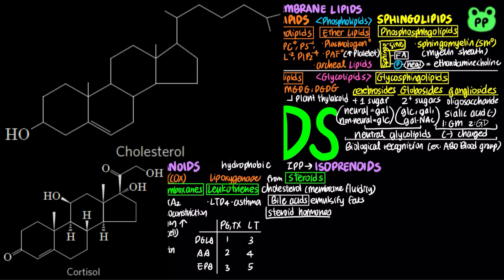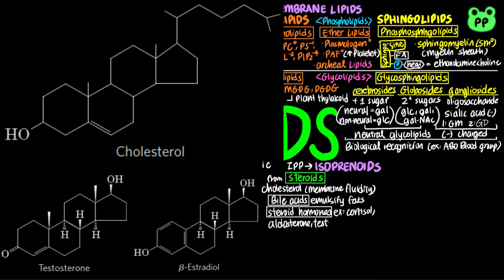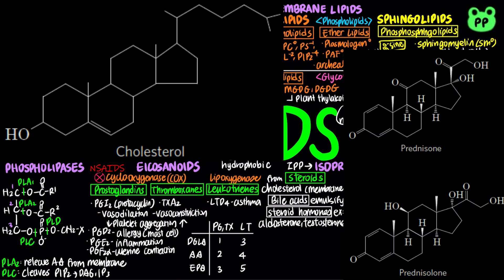Cholesterol's derivatives include bile acids, which function in emulsifying dietary fats, as well as all steroid hormones, including glucocorticoids such as cortisol that respond to short-term stress, mineralocorticoids such as aldosterone that regulate blood pressure, and sex hormones testosterone and estradiol. Prednisone and prednisolone are steroid drugs with potent anti-inflammatory activities, through inhibition of arachidonic acid release by phospholipase A2, thereby inhibiting the synthesis of all three types of eicosanoids.